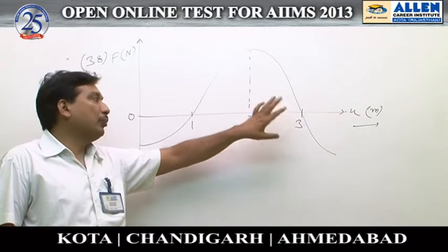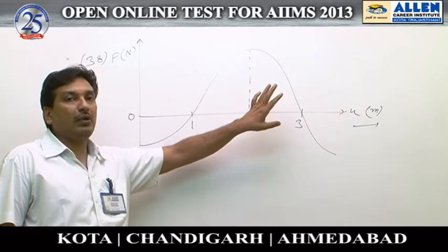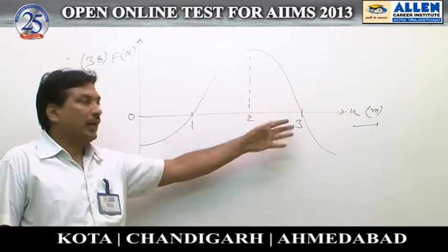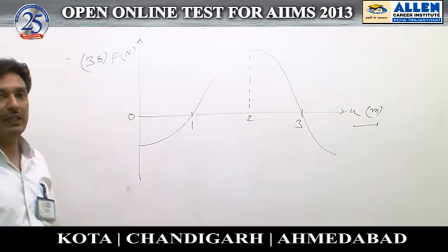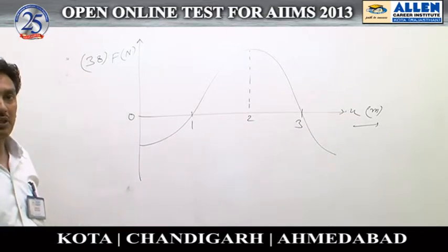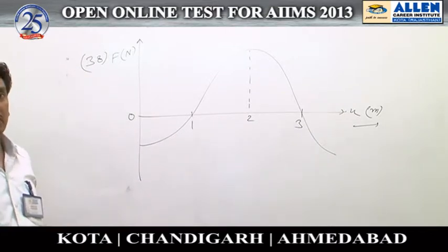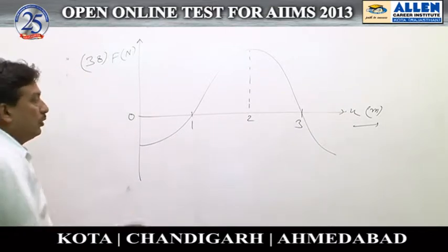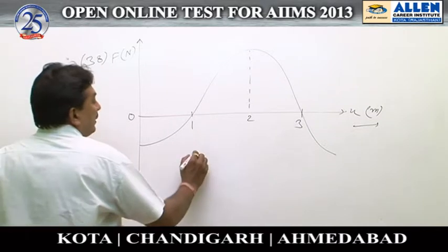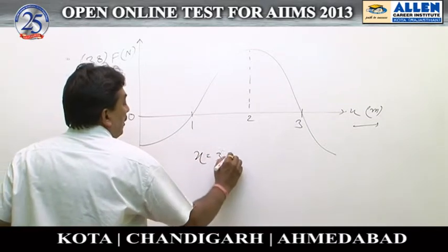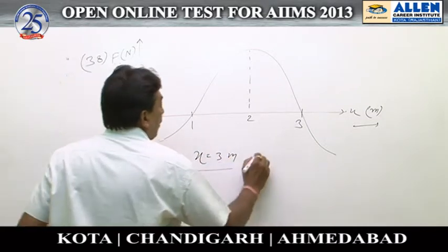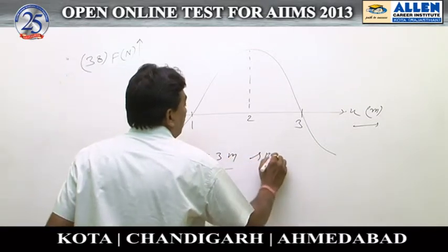If the particle is in stable equilibrium, it means it will be in the lower energy state — potential energy will be minimum. If potential energy is minimum, then kinetic energy will be maximum, meaning speed will be maximum. So at x equal to 3 meters, the speed will be maximum.